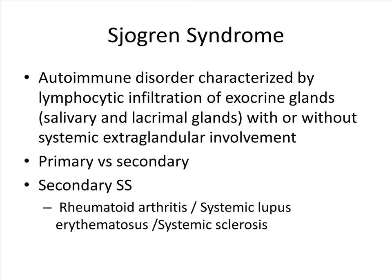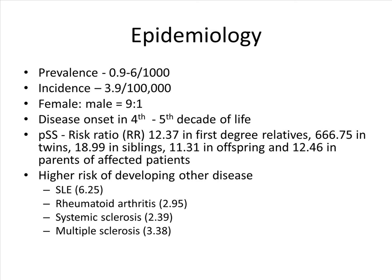The prevalence rate of Sjogren's is 0.9 to 6 per 1,000, with an incidence rate of 3.9 per 100,000. It is more common in females than males, with a ratio of 9:1. Disease onset is often in the fourth to fifth decade of life. They have a relative risk ratio of 2.3 in first-degree relatives and much higher in twins at 666. They are also more likely to develop other connective tissue or autoimmune diseases such as SLE, RA, systemic sclerosis, and multiple sclerosis.